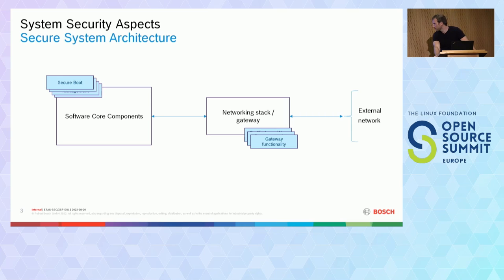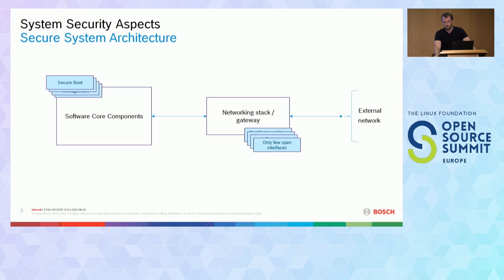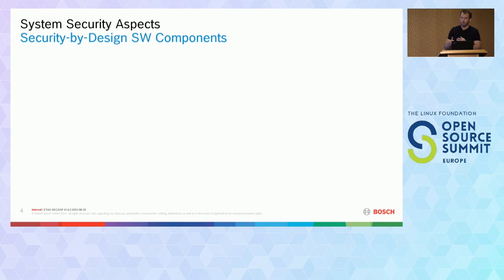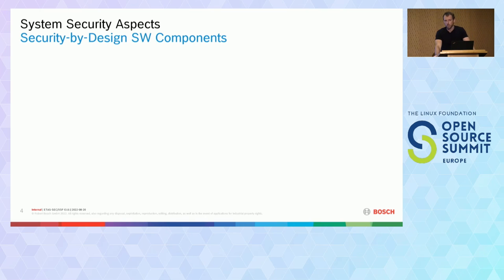This gateway functionality will be enforced by routing functionality, IP filtering, packet filtering, and so on. We only want to have few open interfaces so that we can secure them. This is the first aspect: a secure general architecture which can be deployed either on large scale or on small IoT devices, obviously varying depending on the system.